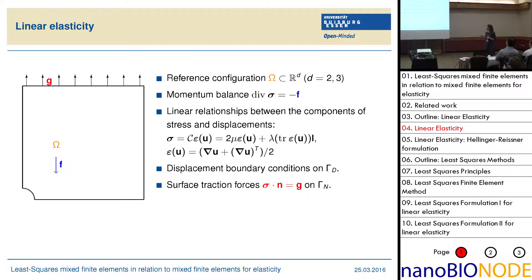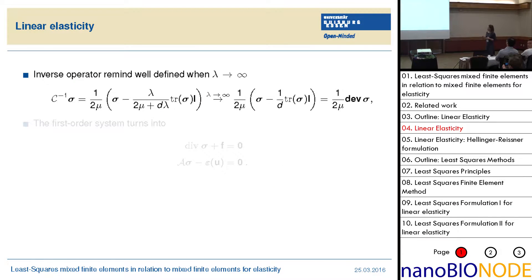One issue is we can scale that problem such that mu is equal to one, but you get trouble with lambda if it goes to infinity. One possibility is to insert some pressure for that term. Another is to use the inverse operator, because that remains well defined when lambda tends to infinity. And then we write A instead of the C operator because you cannot invert it again. So this is the first order system.